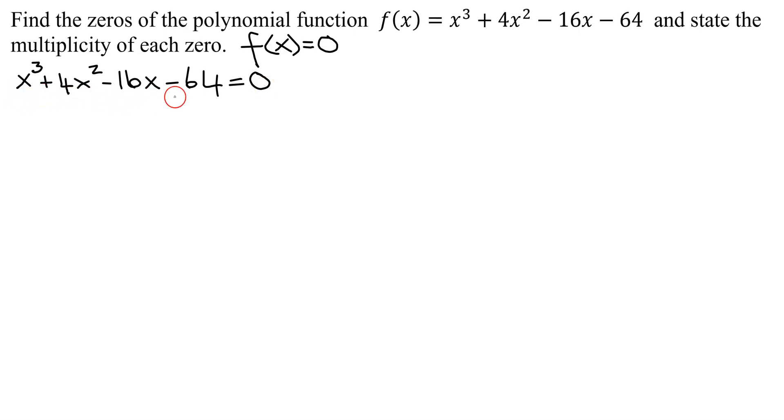What type of equation do I have here? It's degree 3, it's a cubic equation, and there are 1, 2, 3, 4 terms. When there are 4 terms, it's always good to try factoring by grouping, because if it works, it's very quick and simple. But remember, it doesn't work in all cases.